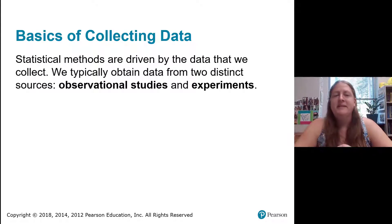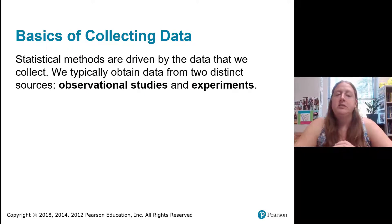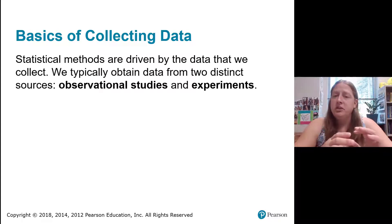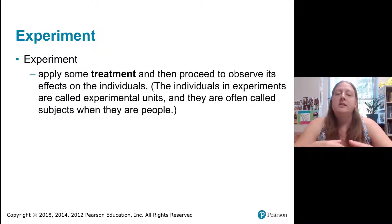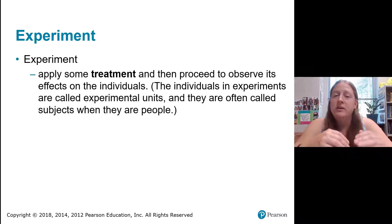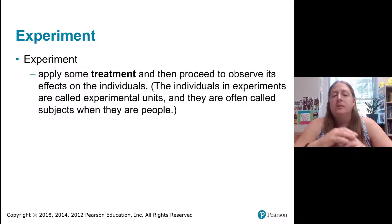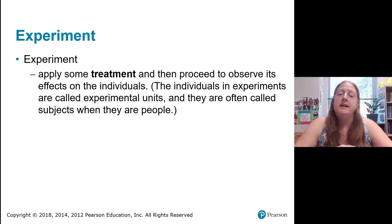There are two basic types of statistical methods: an observational study and an experiment. In an experiment, we apply some treatment and then observe its effects on individuals. When we conduct an experiment, we have experimental units or subjects — subjects if they're people, experimental units if they're some object or thing.